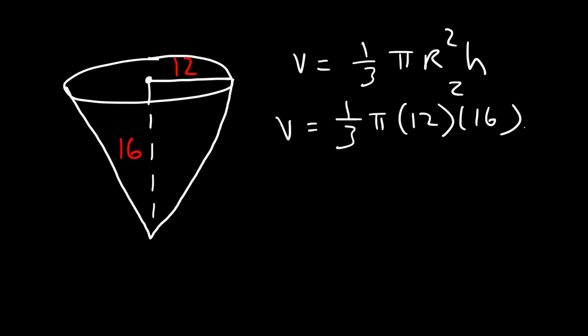12 squared is 144. If we divide that by 3 that's 48, and 48 times 16 is 768. So it's 768π cubic inches.